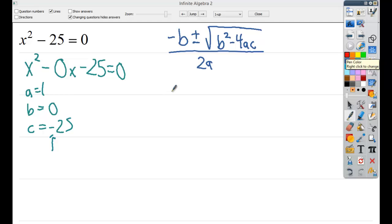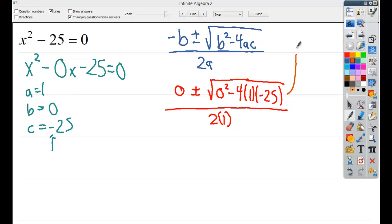So for the next one, negative 0, which I'll write as 0 plus or minus. 0 squared minus 4 times 1 times negative 25 over 2 times 1. 0 squared minus 4 times negative 25. Negative 4 times negative 25 is plus 100. So you're dealing with 100 being what would be later known as the discriminant.